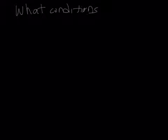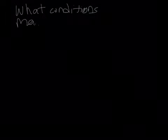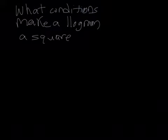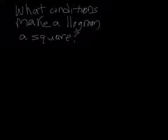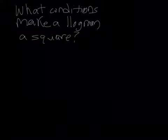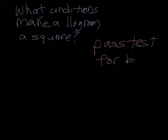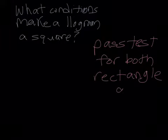So our final question for today is, what conditions make a parallelogram a square? Well, in order to be a square, we need four congruent sides and four 90 degree angles. So that means that our parallelogram must pass the tests for both rectangle and rhombus.